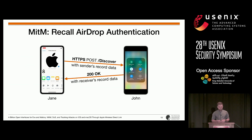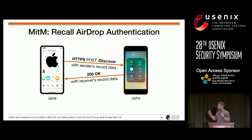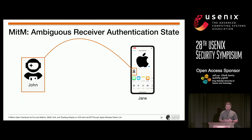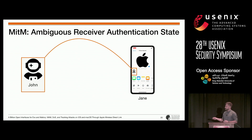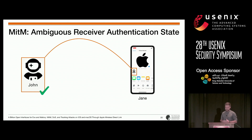Let's talk about the man-in-the-middle attack. Recall that the receiver icon of John is displayed upon receiving a valid response. In the best case, Jane and John are contacts of each other and Jane has a contact picture of John in her address book, and if the authentication procedure succeeds, that picture will be displayed — giving Jane a hint that the connection is authentic. However, we found by a user study that only 27% of Apple device users regularly tag their address book contacts with pictures.